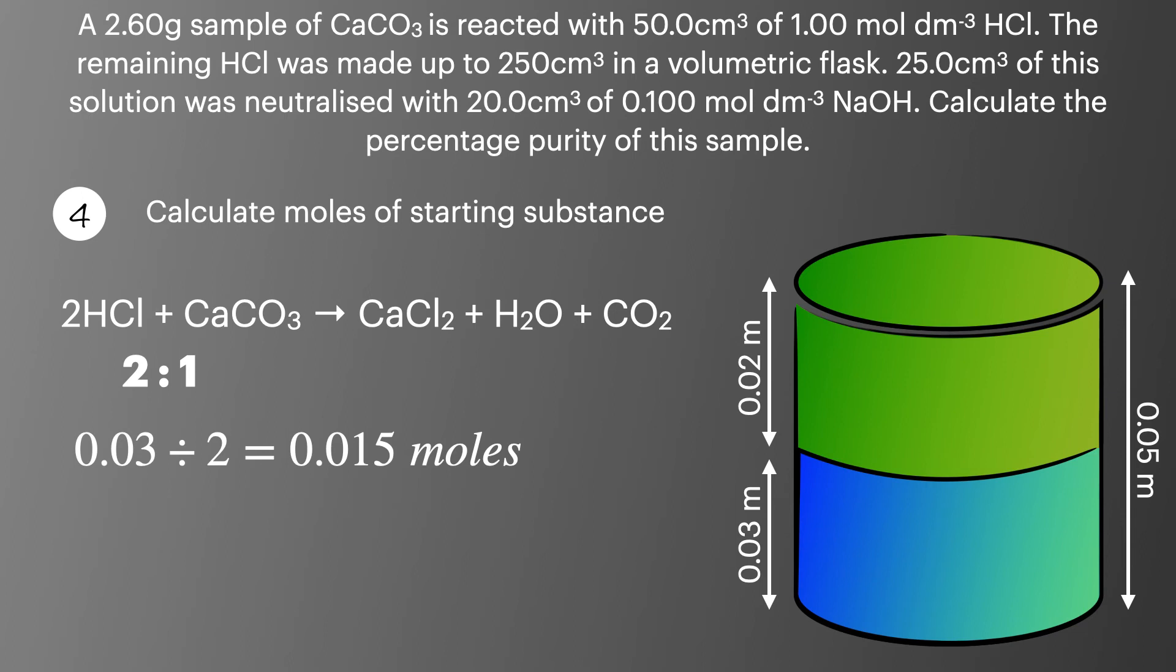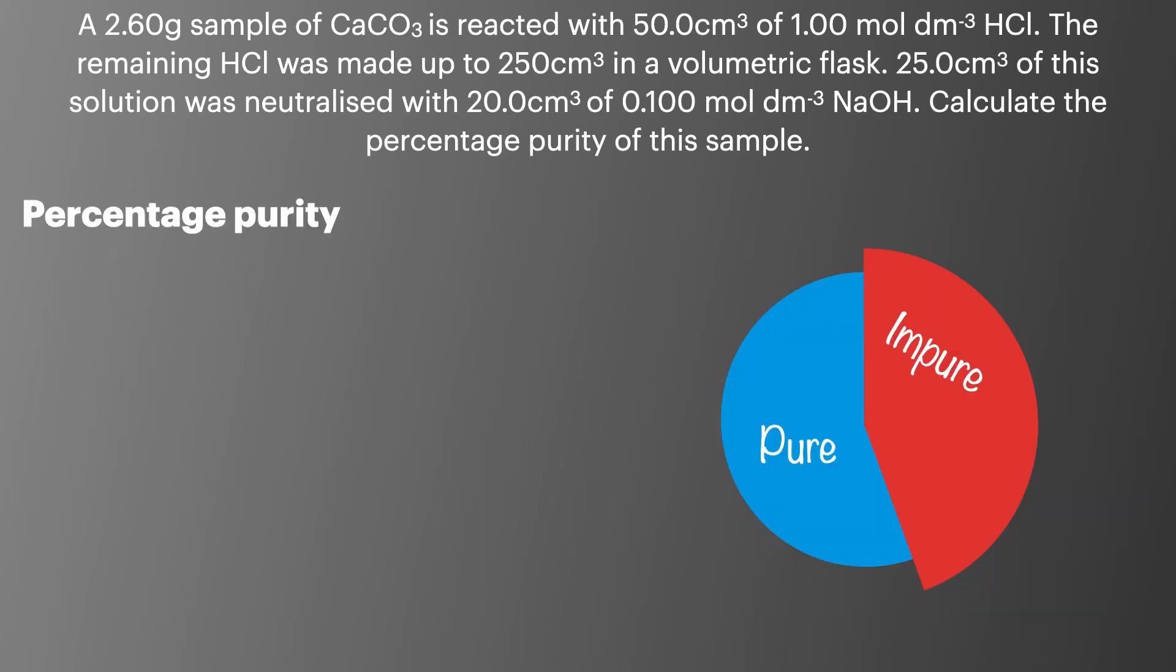But we usually have to make one last calculation and in this question we're going to calculate percentage purity. To calculate percentage purity we must first convert our number of moles of calcium carbonate to a mass in grams. To do this we'll use number of moles times MR equals mass and we'll put in our numbers to get 1.5 grams of calcium carbonate. We'll then divide this mass by the mass of the original sample and multiply it by 100 to end up with 57.7%.